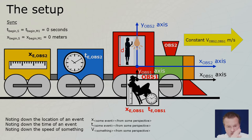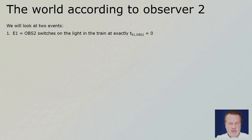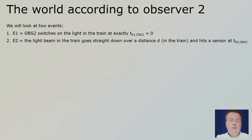This is what we call zero meters for both of them, and then the train starts moving away. Now let's imagine the woman with the wine. She will switch on the light — that will be event number one — and she will do so exactly at t equals zero on her clock. So the time of event one, switching on the light through the eyes of observer two, equals zero.